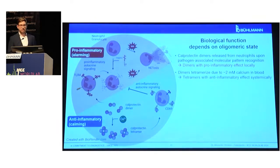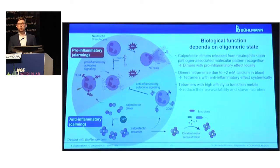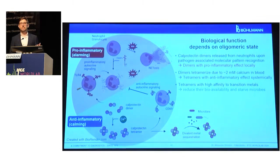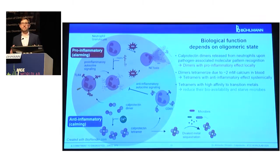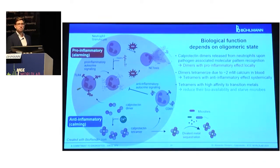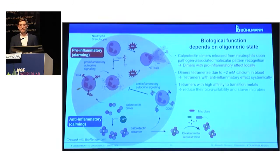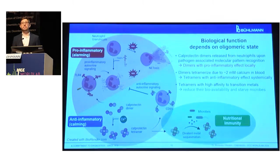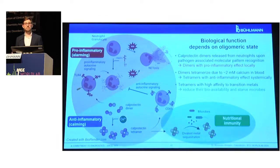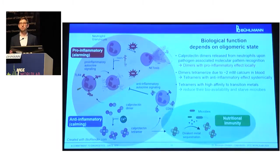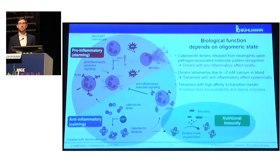In addition, as another function, as a tetramer calprotectin can bind metal ions. When certain pathogens like microbes invade the body, they feed off metal ions as nutrients. Tetrameric calprotectin can sequester these metal ions, and therefore calprotectin also has a nutritional immunity — it can effectively starve these microbes. So it also has a further defense function.